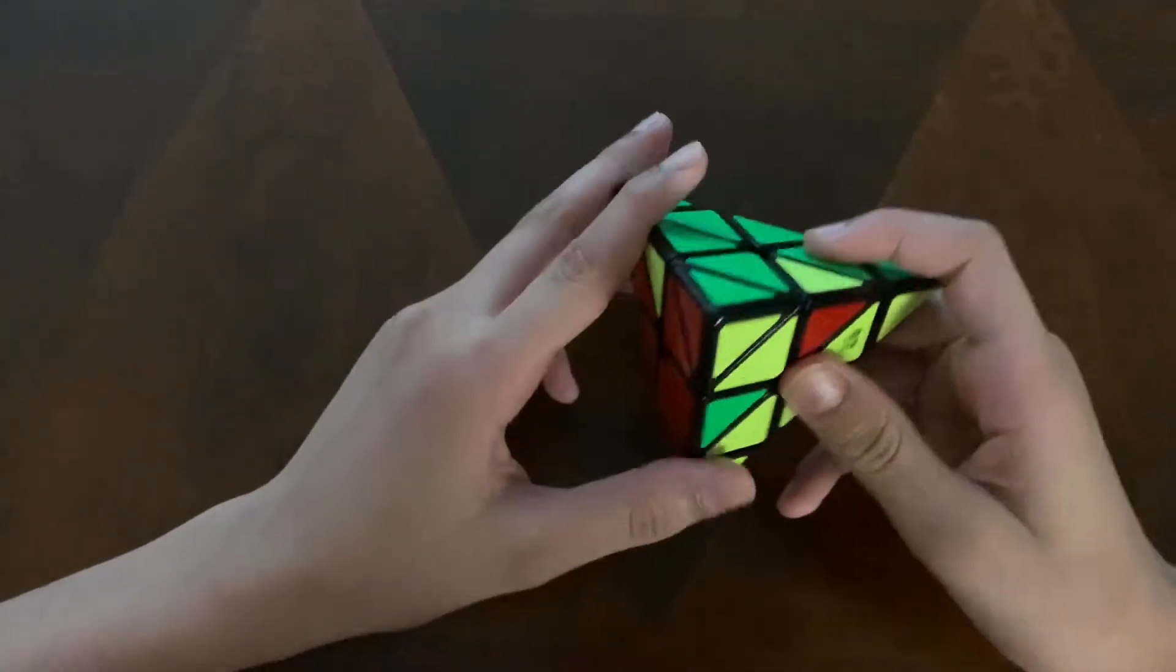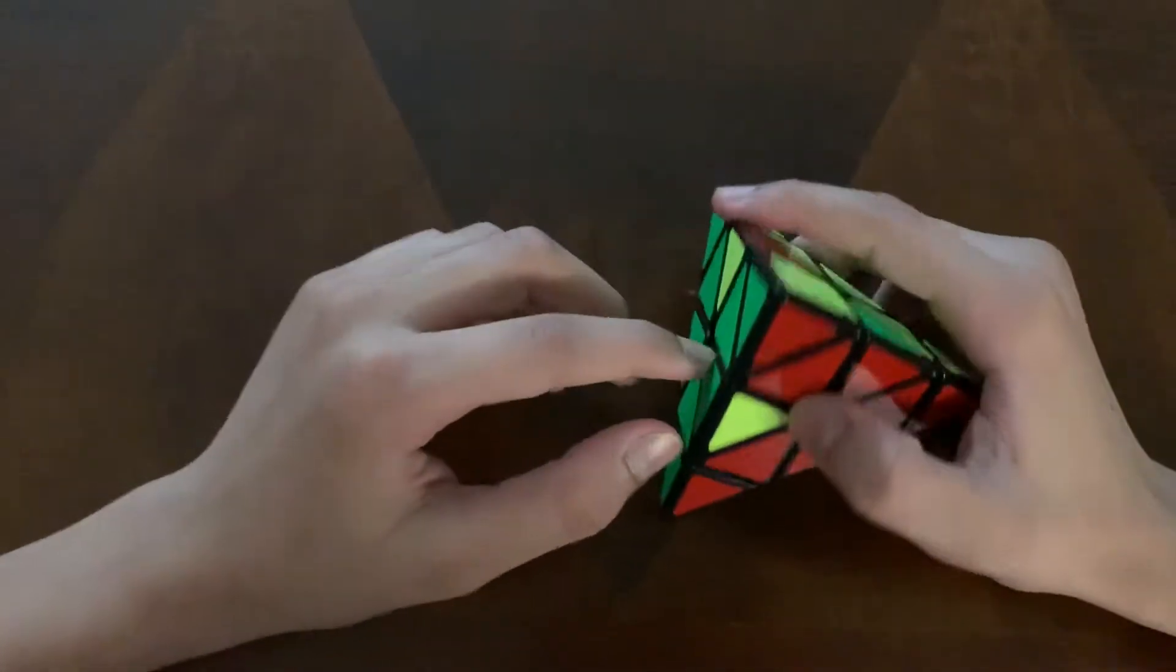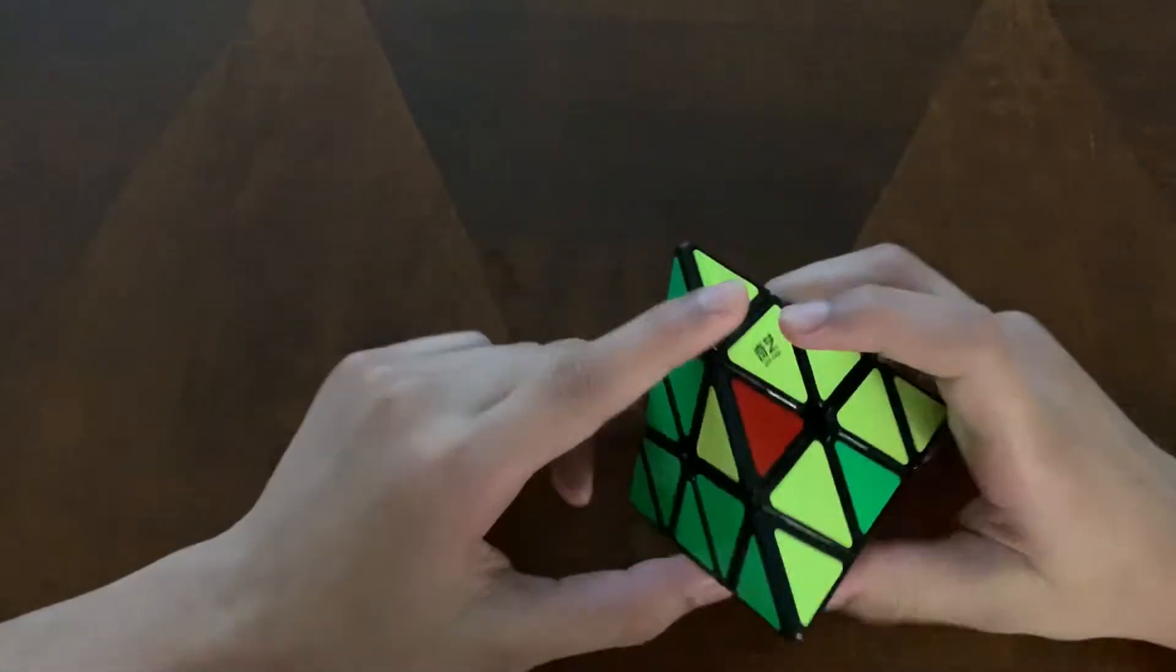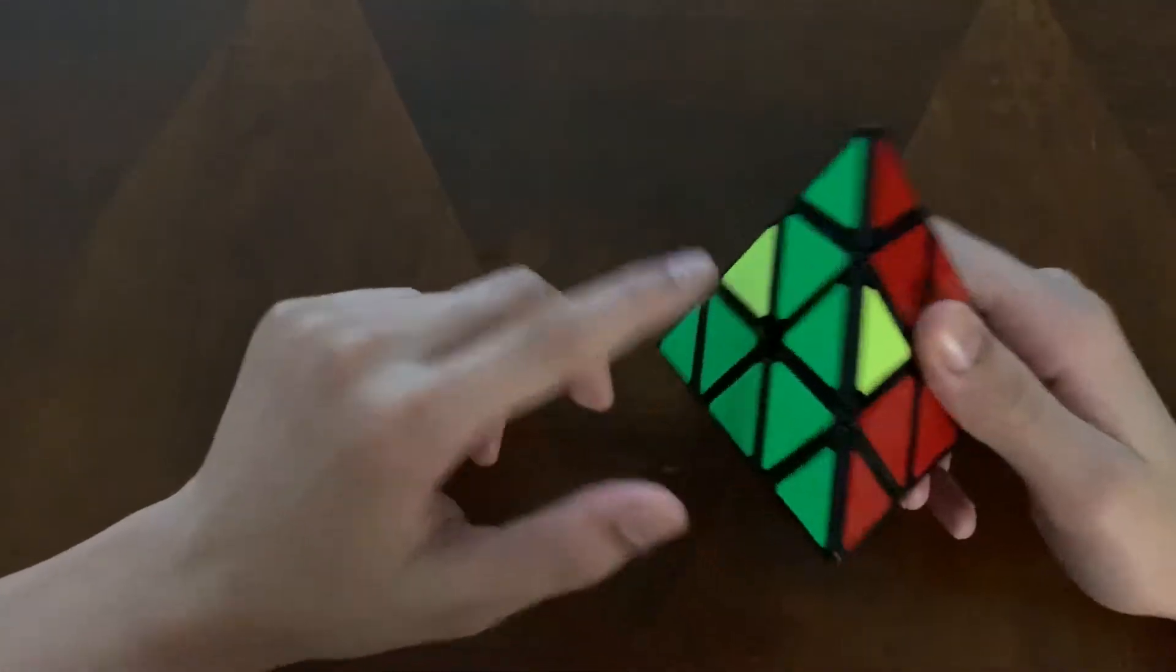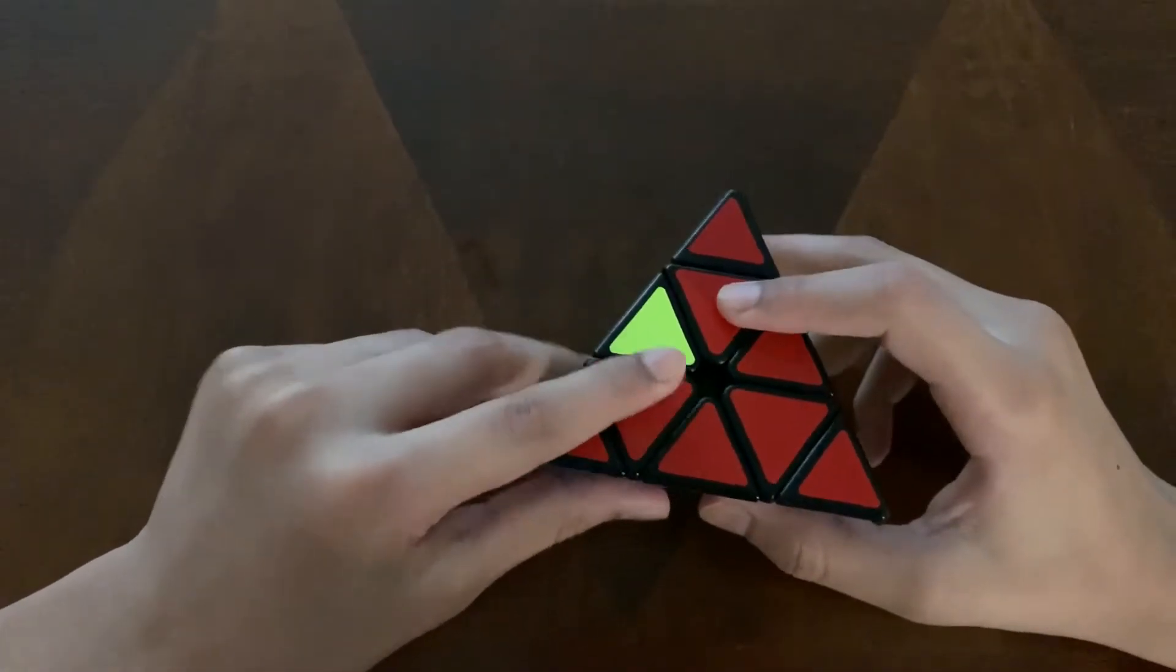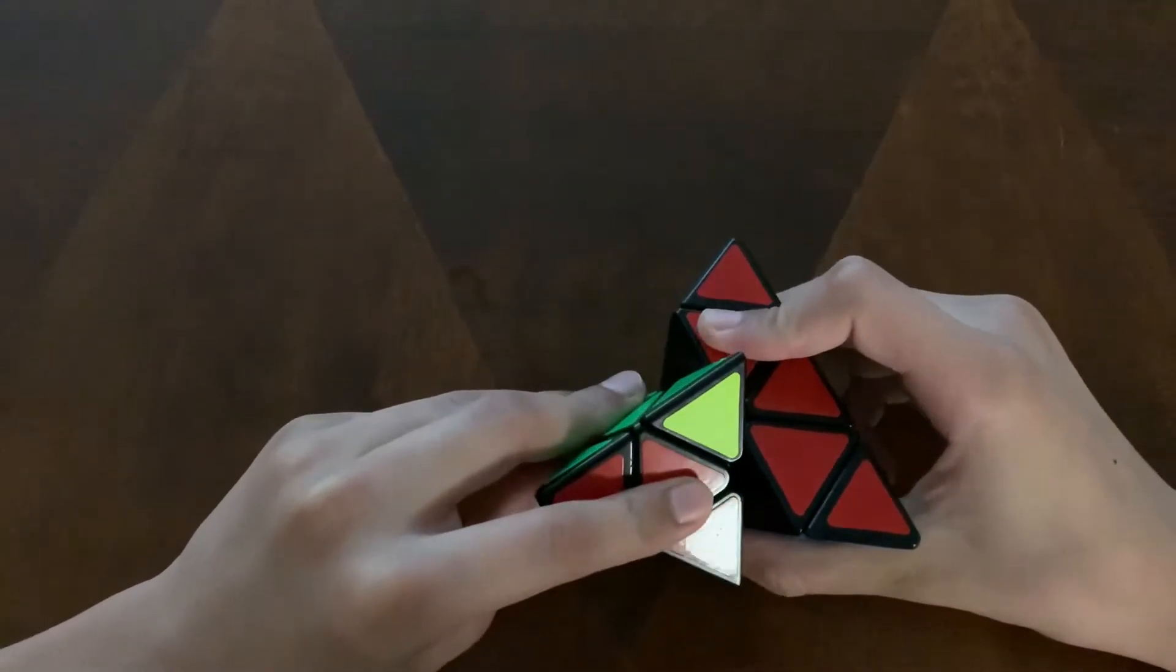What we want to worry about is getting all these pieces in the right position. Now this may look difficult because they're oriented the wrong way because this piece needs to be here and you might think you have to do a complicated algorithm but you actually don't. It's actually quite a simple algorithm. First we're going to take this corner part like this mini pyramid and we're going to turn it like that.